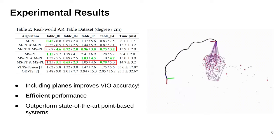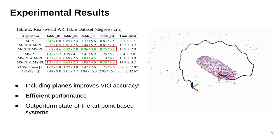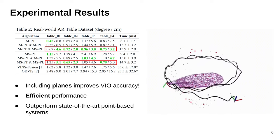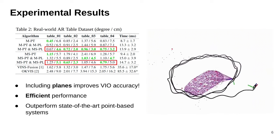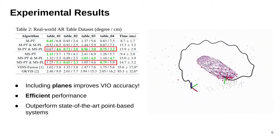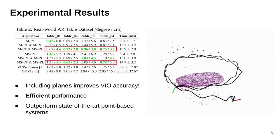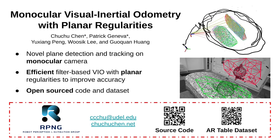Moving on to the experiment results on our collected AR table dataset, we demonstrate that incorporating plane features leads to further improvements in VIO accuracy. In addition, our system shows efficient performance and outperforms state-of-the-art point-based systems. Please check out our open source code and dataset for more details.